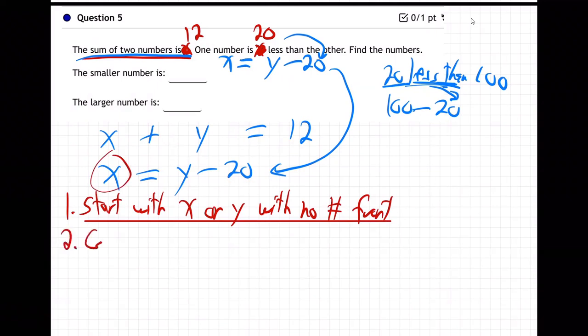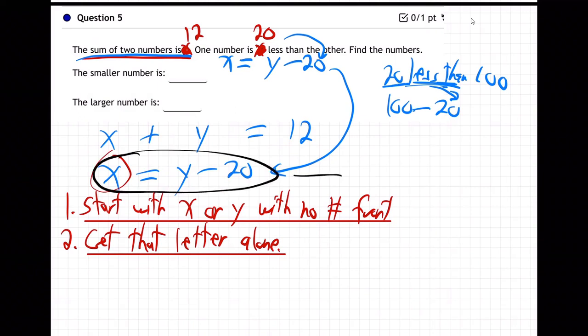And step number two, get that letter alone. And in our case, well, get that letter alone. Step two, get that letter alone. And in our case, X right here, X already is alone. See how the X is already alone right here? I don't have to do anything. Great.